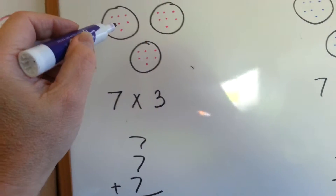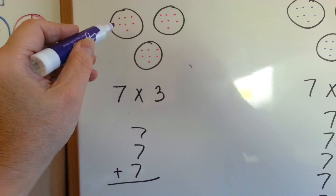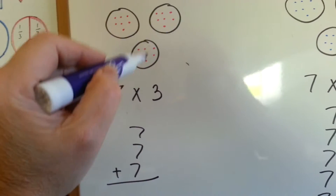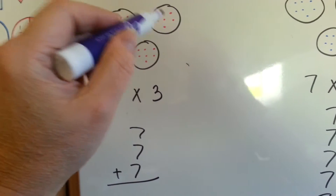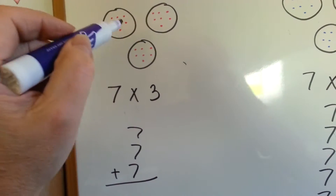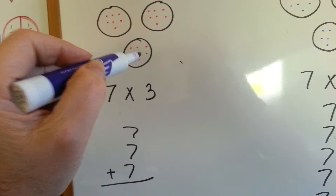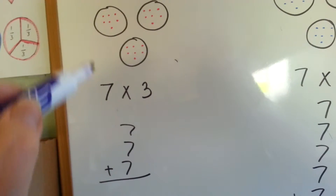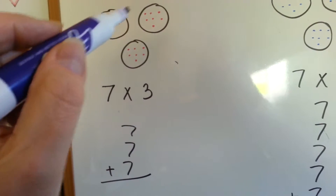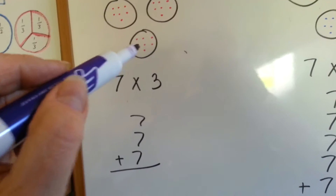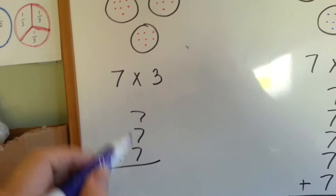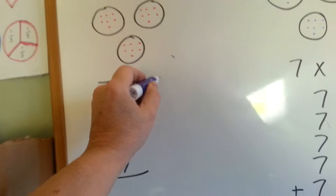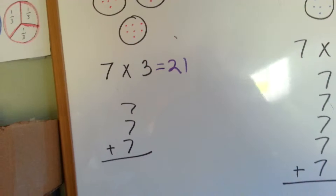There's 7 dots in this circle, and this circle, and this circle. So that means we have a 7 one, two, three times. That's 7 times 3. It's the same thing as 7 plus 7 plus 7. 7 times 3 is 21.